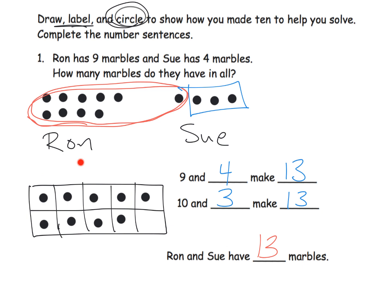I'm kind of foreshadowing a 10 frame by arranging my dots—five in a group and then four with one missing here. So I'm foreshadowing a 10 frame here. And then if I were to put Sue's marbles in a 10 frame, it would look like this: 1, 2, 3, 4, 5, 6, 7, 8, 9, 10. Sue having only four marbles, it would look like 1, 2, 3, 4.